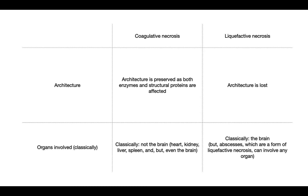In coagulative necrosis, both the enzymatic and structural proteins are affected, so the tissue doesn't break down — the architecture is preserved. You can look at the tissue, it's very eosinophilic, there's loss of basophilia, but you can actually see what the organ is. In liquefactive necrosis the architecture is lost. Coagulative necrosis classically involves the heart, kidney, liver, and spleen — basically below the neck. Coagulative necrosis does occur in the brain too; the Purkinje cells I showed earlier are coagulative necrosis — you can still see the architecture but the cells are dead.